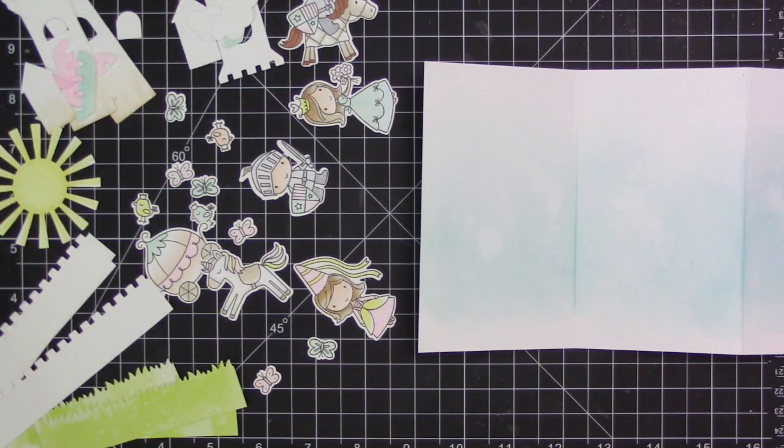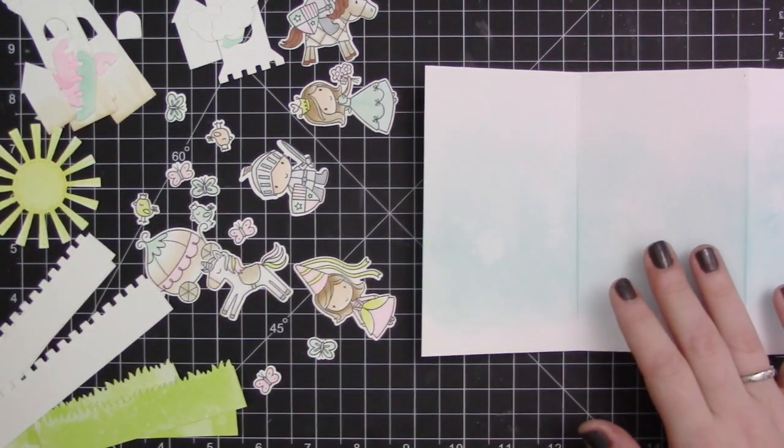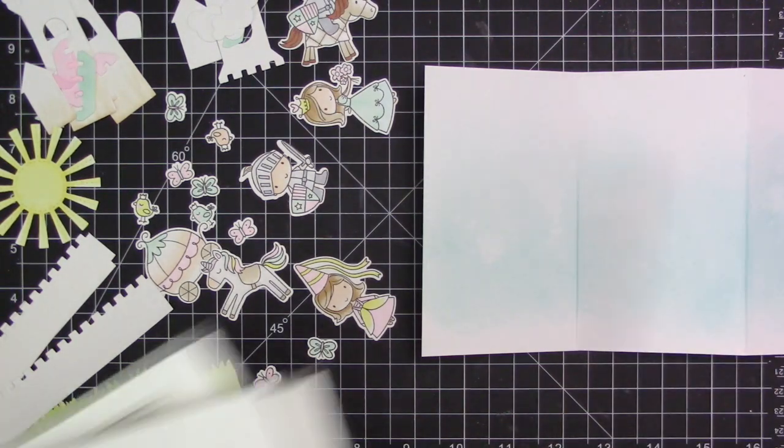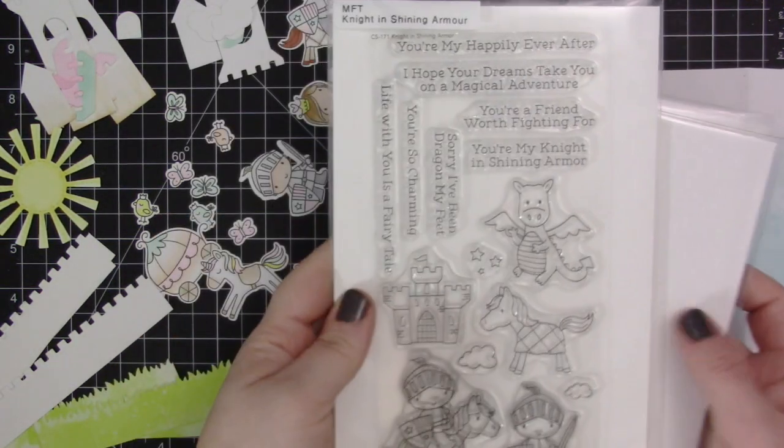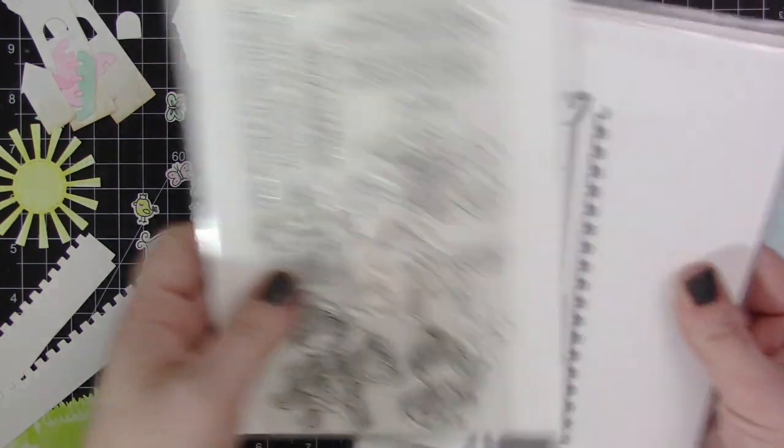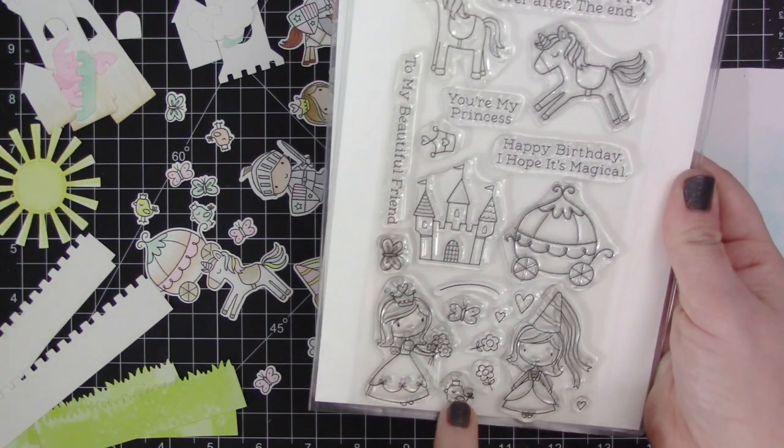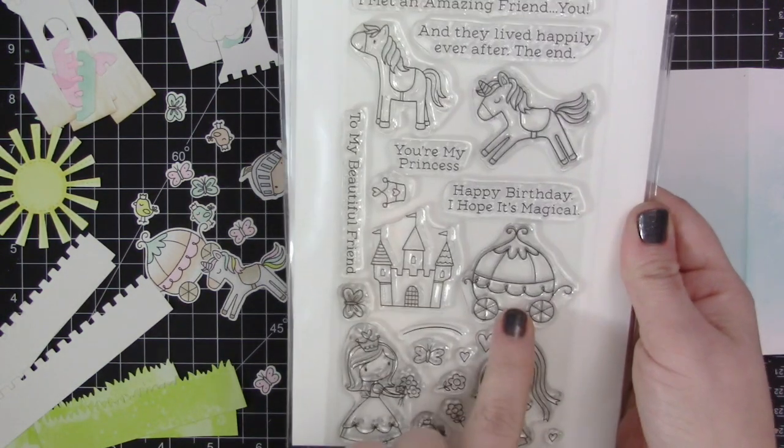Once I have the grass done, I'm going to start to assemble the cards. Now you can see here I have a whole lot of stuff going on. I have used the Night in Shining Armor and the Once Upon a Time stamp sets. These are both new for January 2017. I've also used the new castle dynamics which is super fun. It has everything you need in this die set to create fun castles.